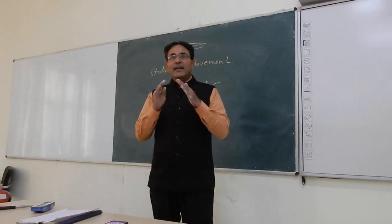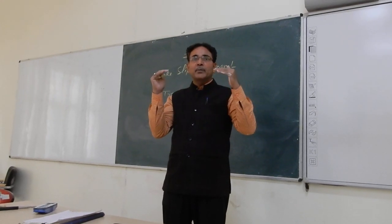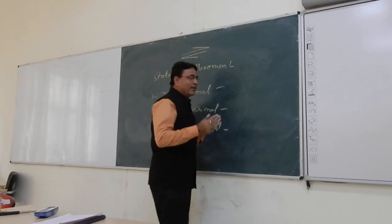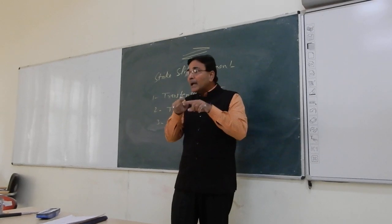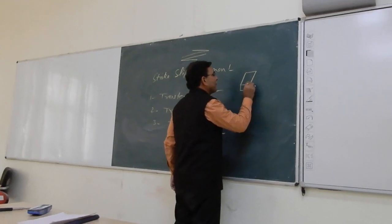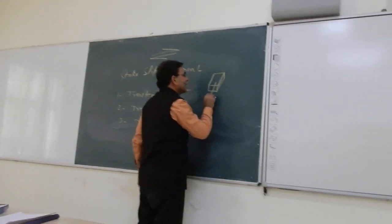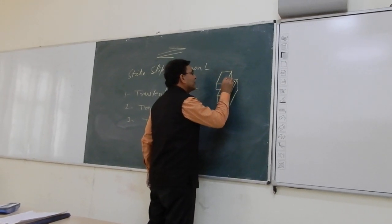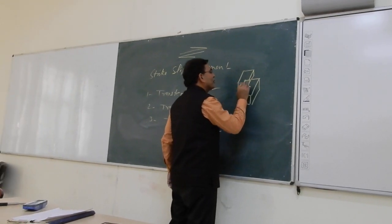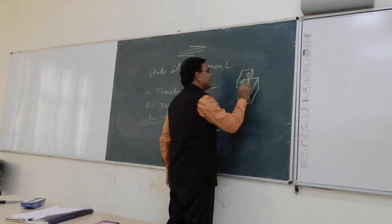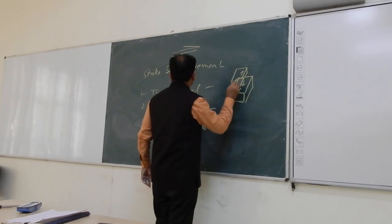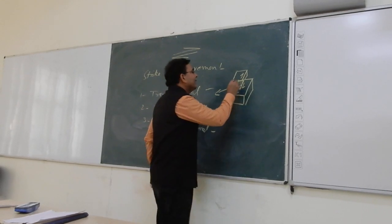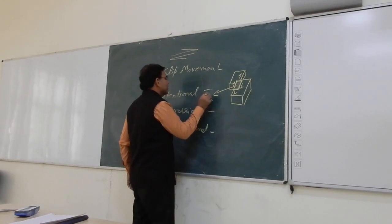Trans-tensional basins are formed when the plates are under strike-slip movement side by side. If this plate is moving in one direction and another plate is moving in another direction, and there is an overlapping part, a rhombus-shaped basin is formed at the overlapping part. This basin is known as a trans-tensional basin.